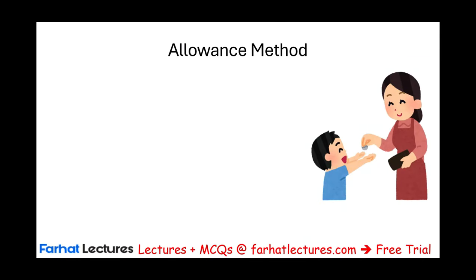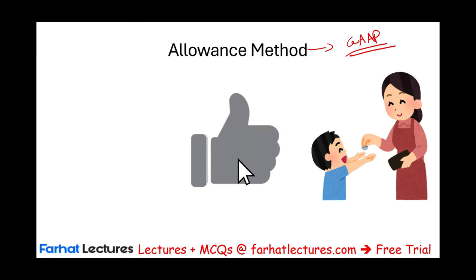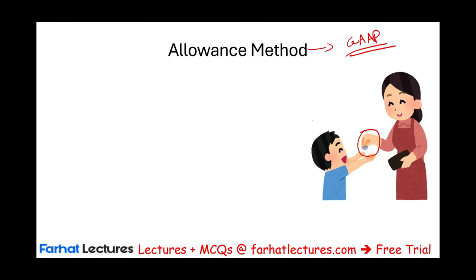I will start by discussing two advantages of the allowance method and explaining why the allowance method is a GAAP method. Before I do that, I want to show you a picture and make a point. This is a mother and this is her child, and the mother is giving money to her child — she is giving an allowance for the child to spend. Let's assume this allowance is a dollar. As far as the mother is concerned, her expense takes place when she hands this dollar to her child.